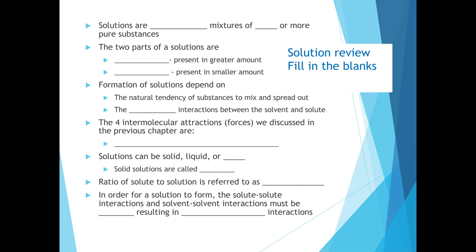Welcome back from your pause. Let's walk through these together. Solutions are homogeneous mixtures of two or more pure substances, meaning that the parts of our solution are uniformly distributed throughout the mixture. There are two major parts to every solution. The part present in the greatest amount is called the solvent, and the part present in the smaller amount is called the solute.